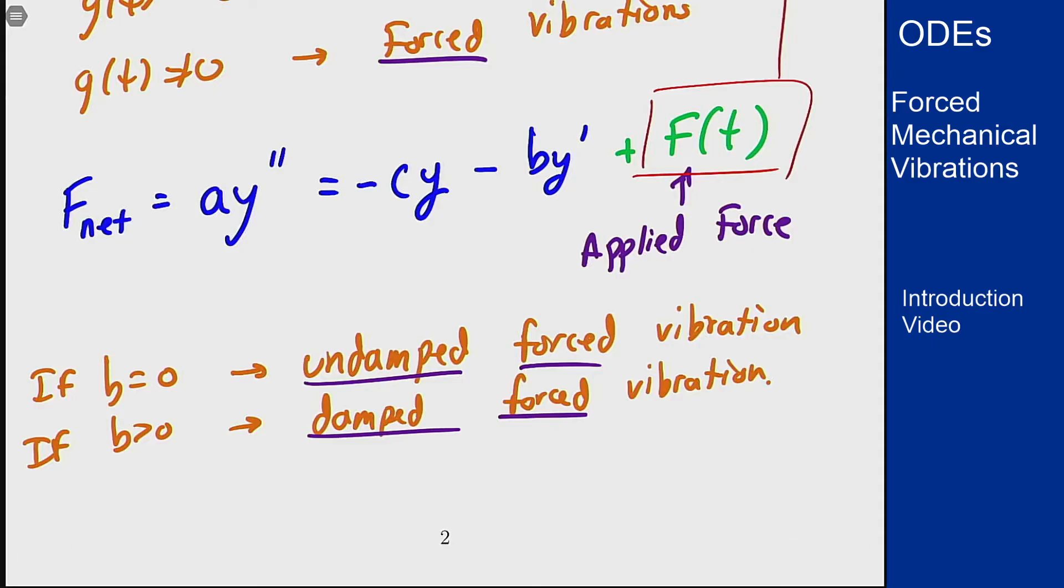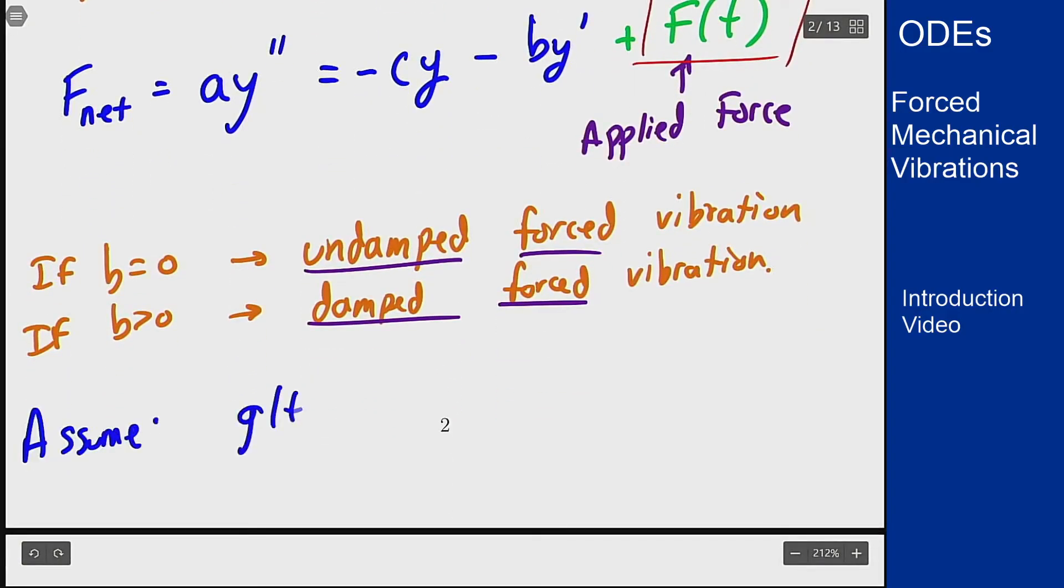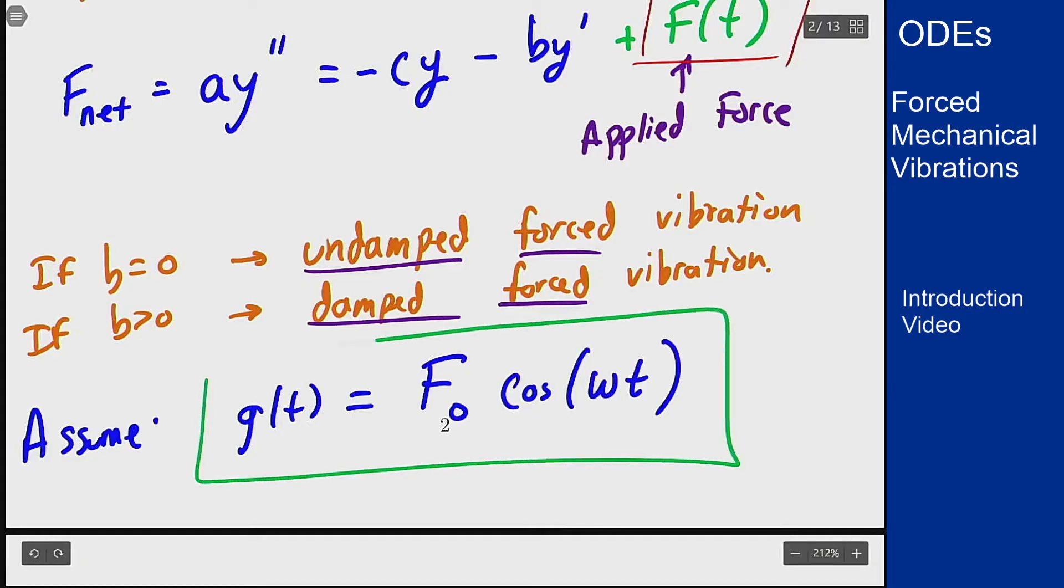You could do this for any function f(t), any sort of forcing would work and give you results, but the most interesting ones come from when this forcing function is also periodic. So in terms of what we're going to handle here, we're going to assume that this g(t) function is a cosine function, so it's going to be f₀ (for some magnitude of the force) times cos(ωt), where ω is the frequency of oscillation of this force. We're going to assume that we have a periodic input force acting on this system and we want to see how these interact.